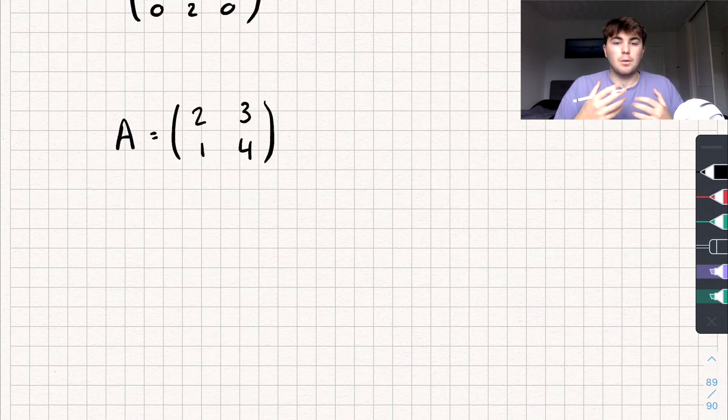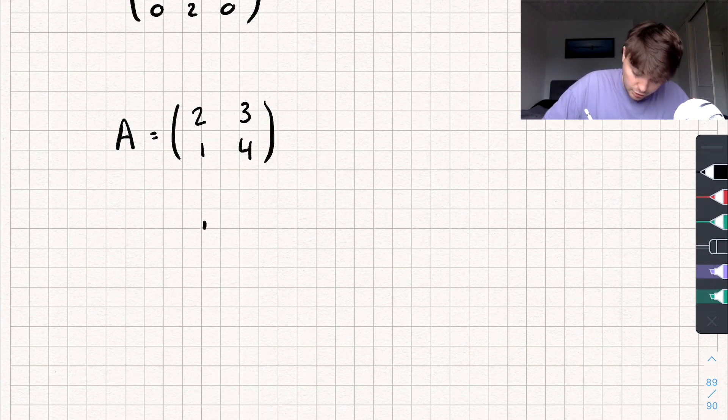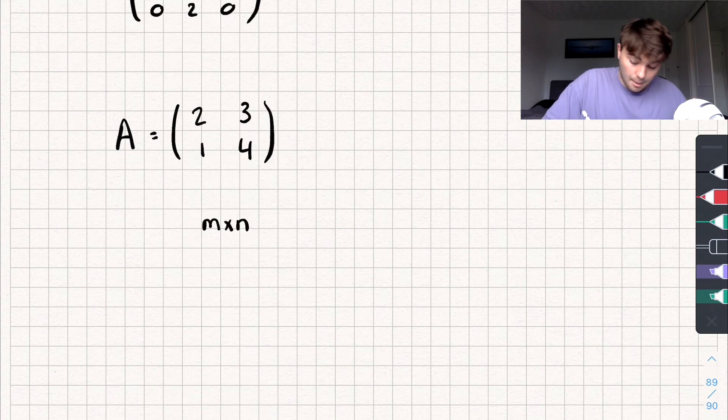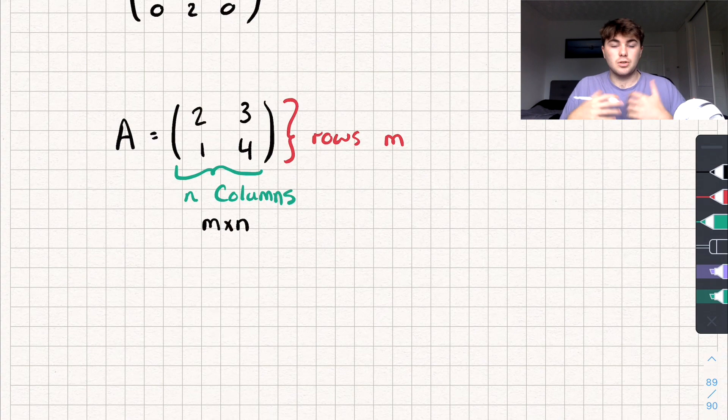And so when we want to talk about the dimension or the size or the order, whatever word you want to use of the matrix, we talk about how many rows it's got and how many columns. So we write it like this. We would call a matrix an M by N matrix, where we have the number of rows being M. So rows is our M and the number of columns is N. So N columns. So this matrix I have just drawn would be a two by two matrix.